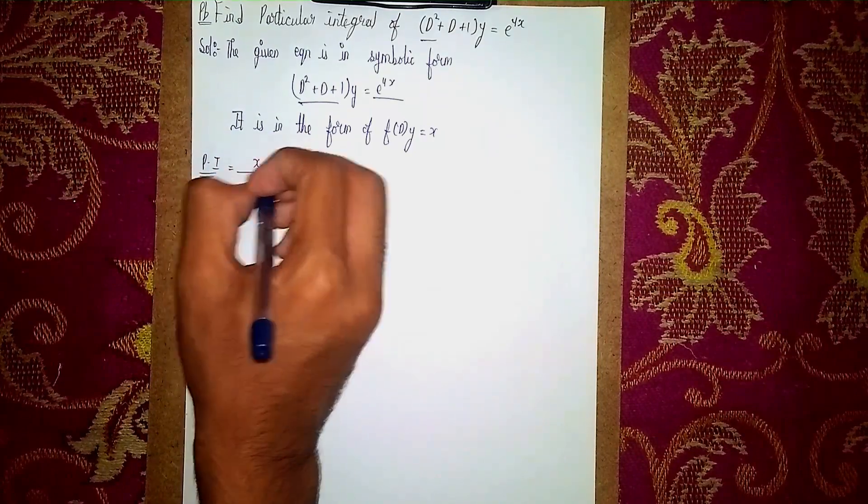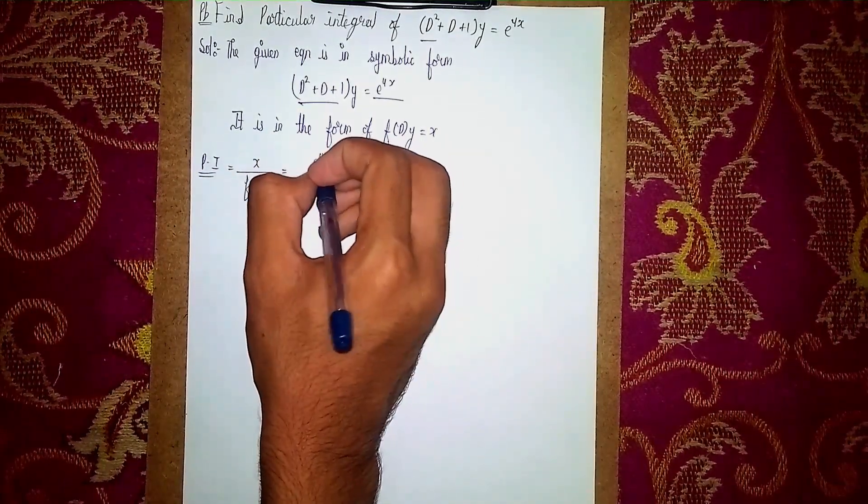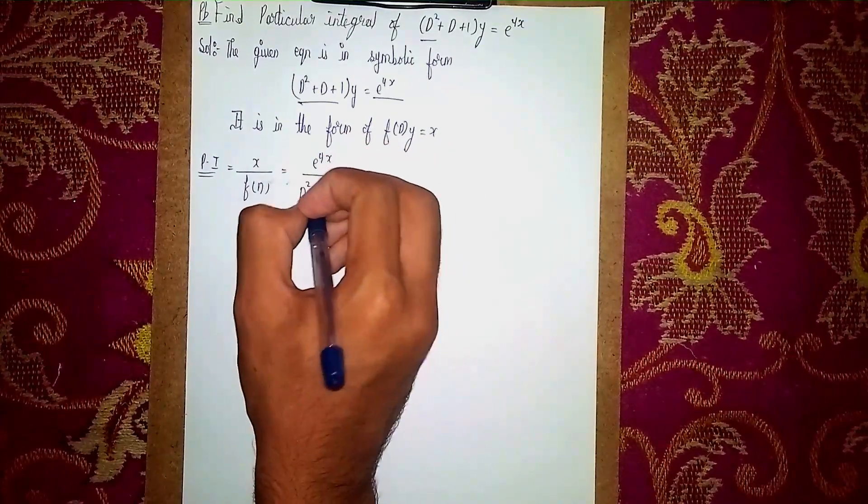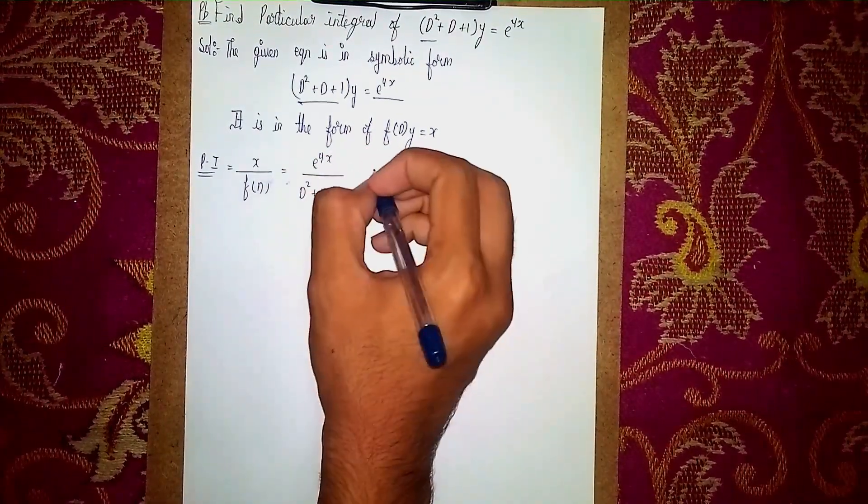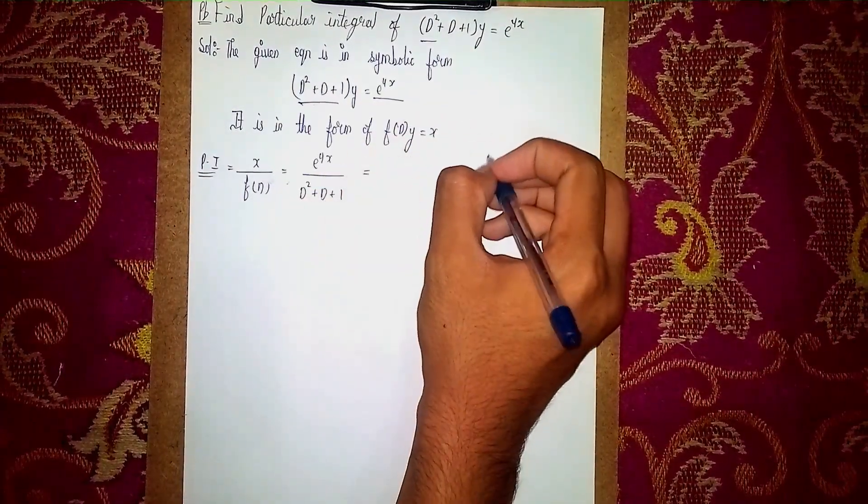P.I. is equal to x by f of d. What is x? E power 4x. E power 4x by d squared plus d plus one. This solution for f of d.